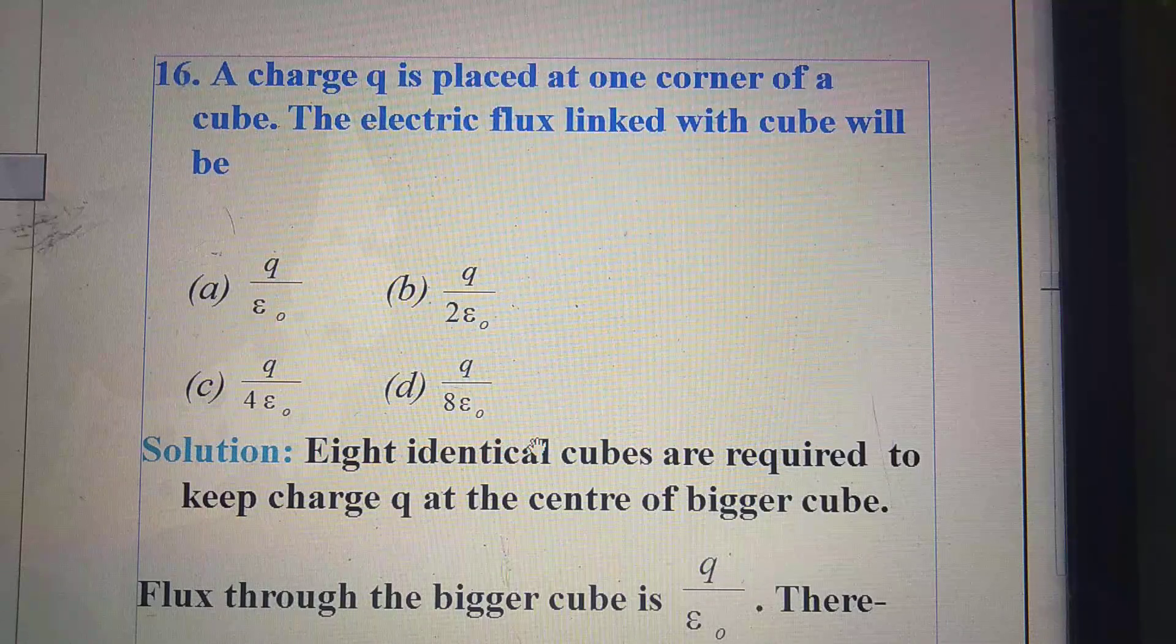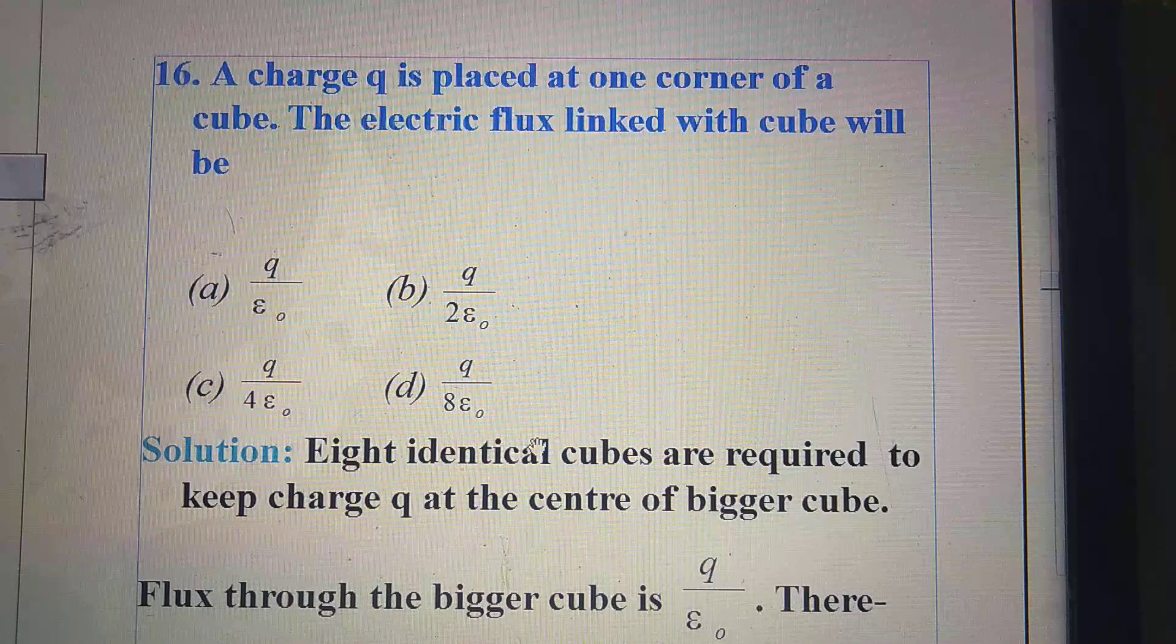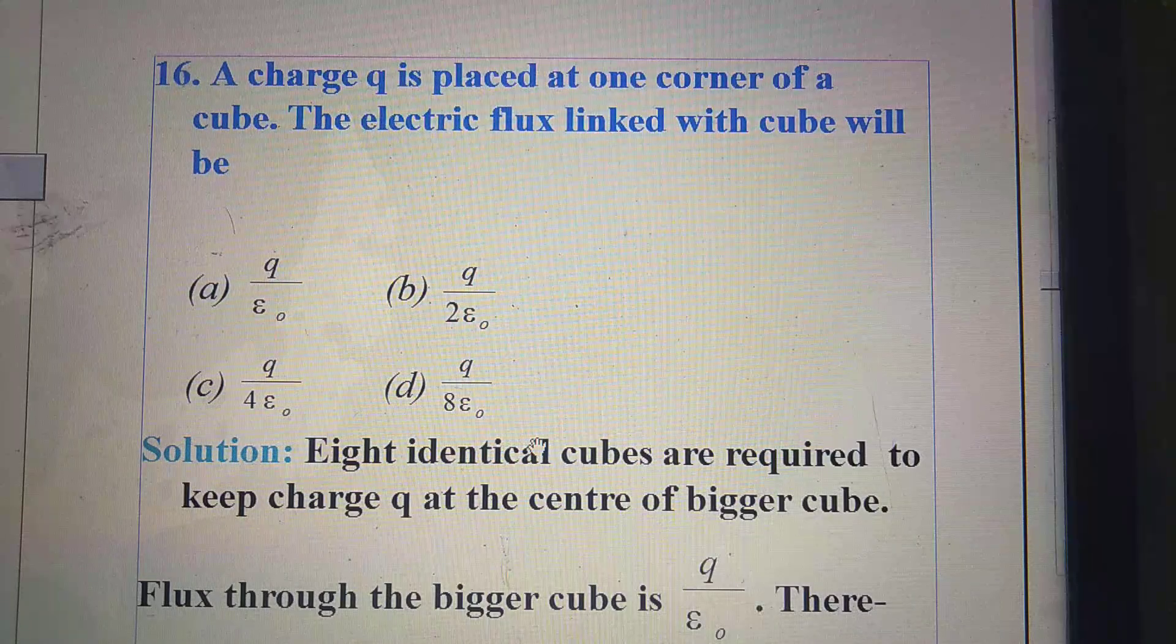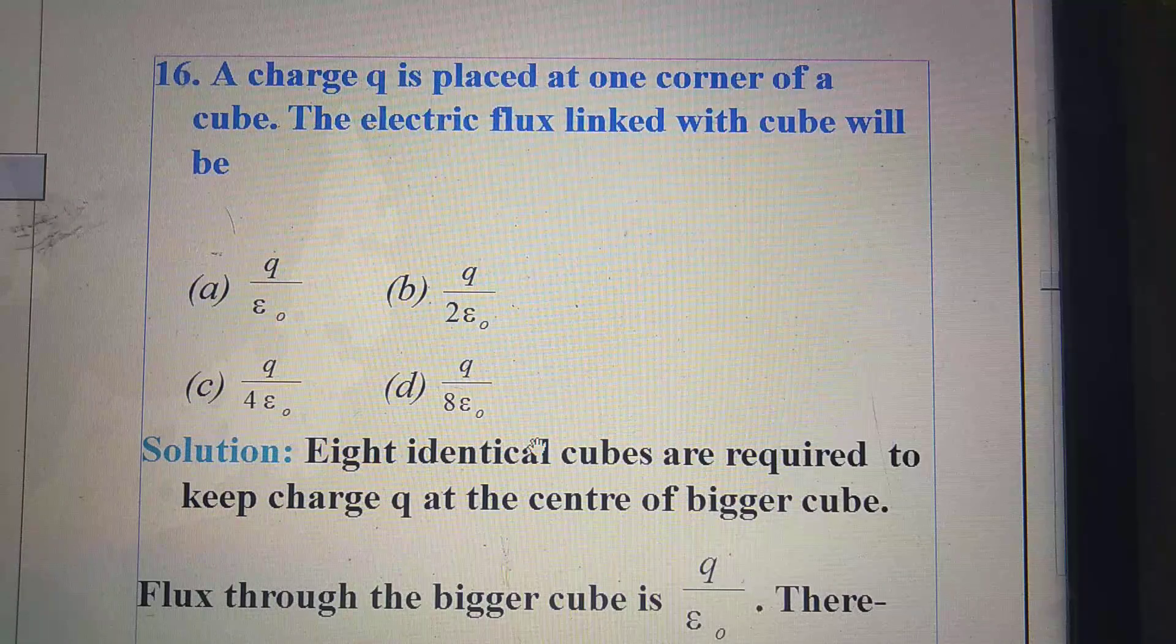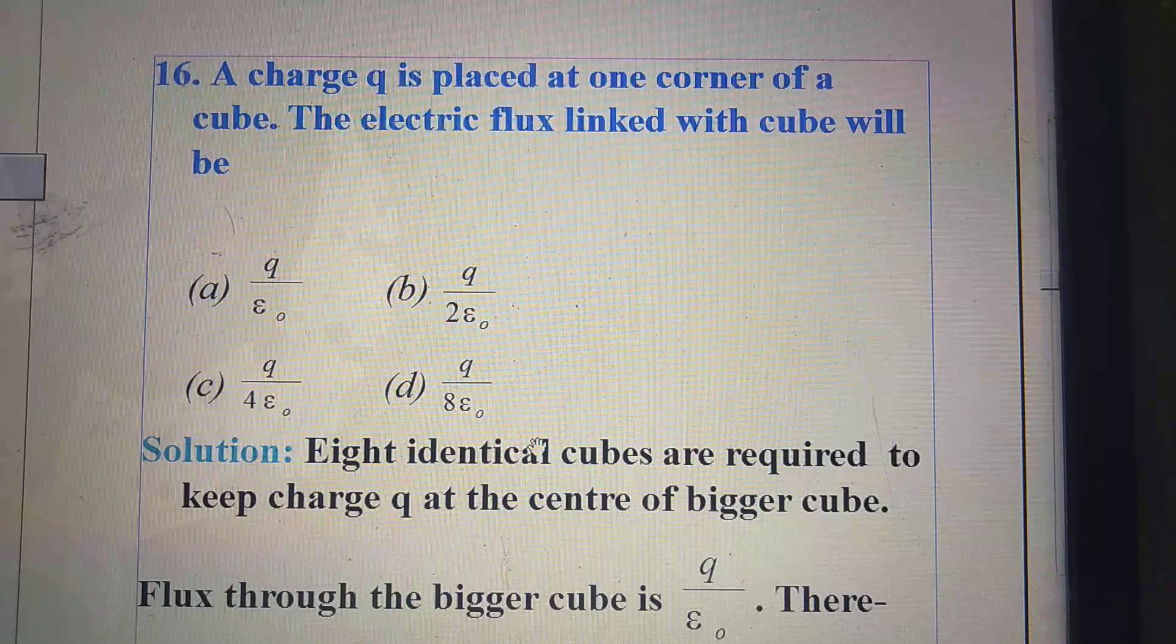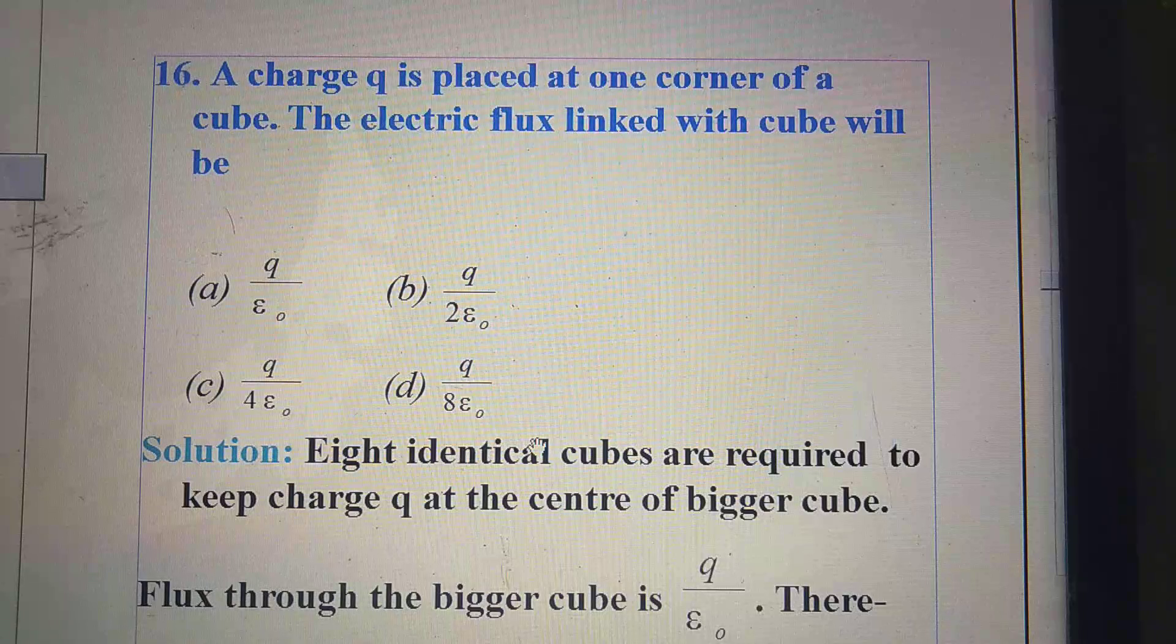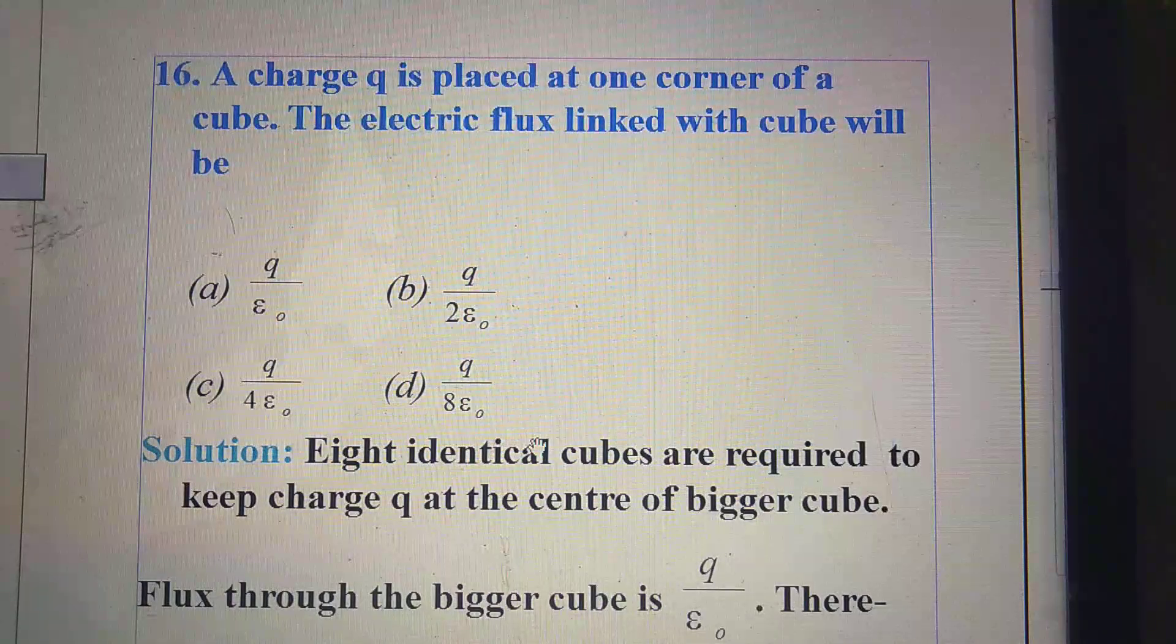First question: a charge Q is placed at one corner of a cube. The electric flux linked with the cube will be option A Q by epsilon naught, option B Q by 2 epsilon naught, option C Q by 4 epsilon naught, option D Q by 8 epsilon naught.